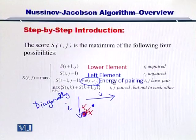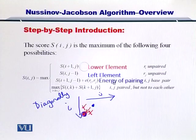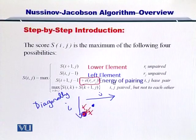Of course, it is simple to understand now that if you're talking about the lower element, there is no additional hydrogen bond that is formed. If you're talking about the left element, there is no hydrogen bond that is formed. But in the case of the diagonal element, you have to consider the energy that is released as a result of the nucleotide coupling.